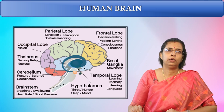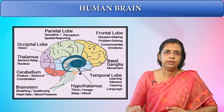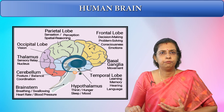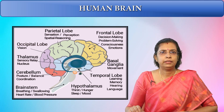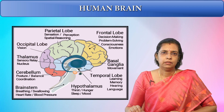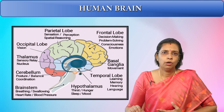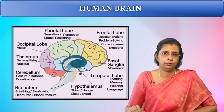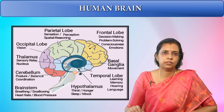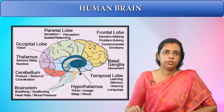The parietal lobe is involved in sensation, perception, and spatial reasoning. The occipital lobe is very important in vision and seeing things. The thalamus is important in sensory relay and other functions. The cerebellum is important in coordination, movement, posture, and balance. The brain stem, or pons, is important in breathing, swallowing, and regulating heart rate and blood pressure.